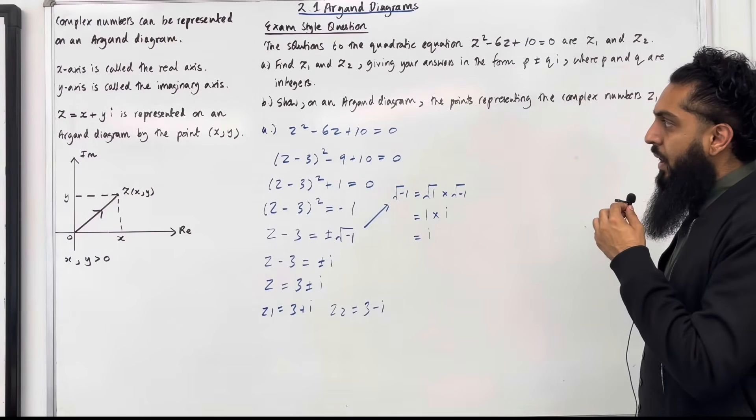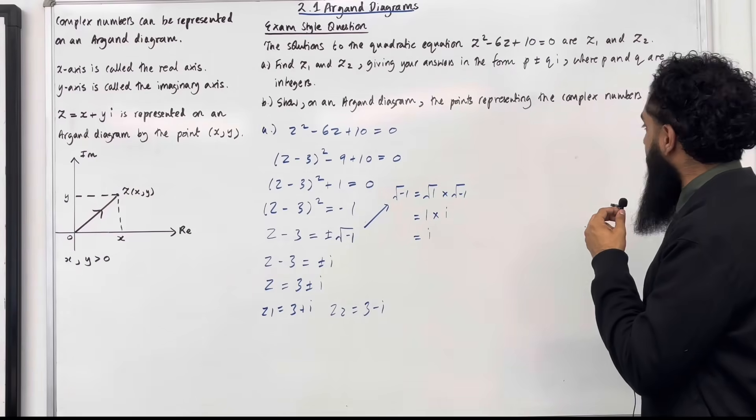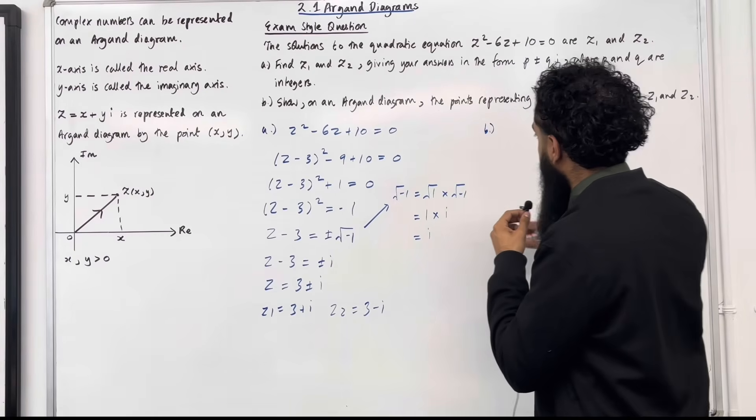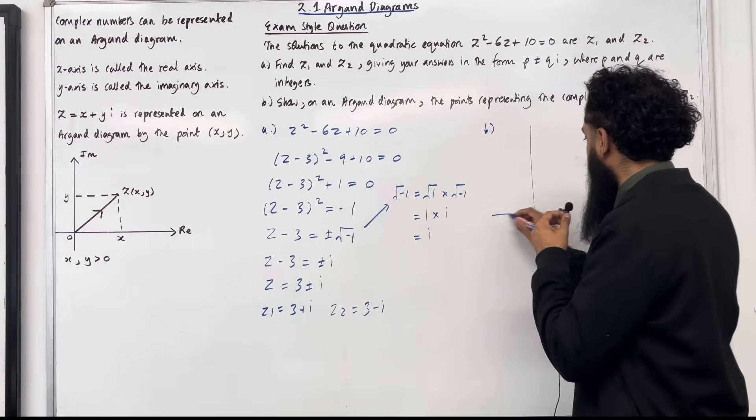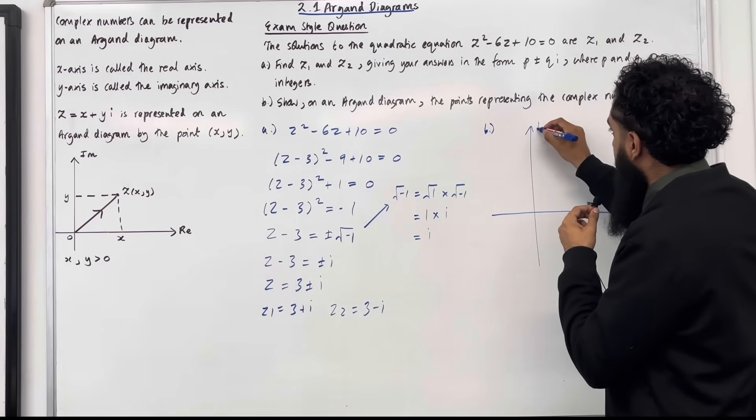Part B: Show on an Argand diagram the points representing the complex numbers z₁ and z₂. In part B I'm going to draw an Argand diagram. Here is my Argand diagram. This is the real axis and this is the imaginary axis.